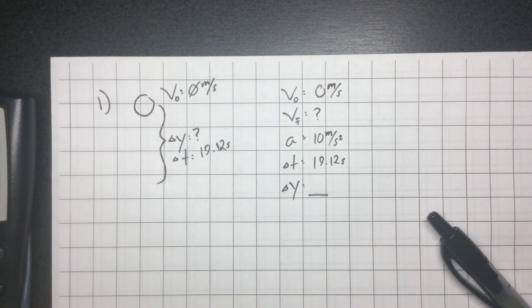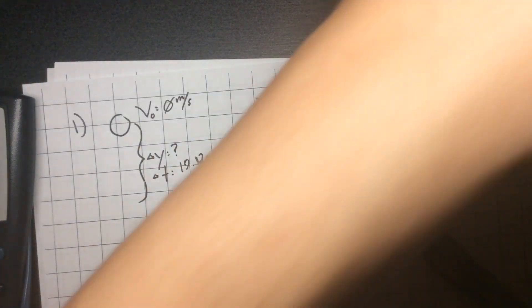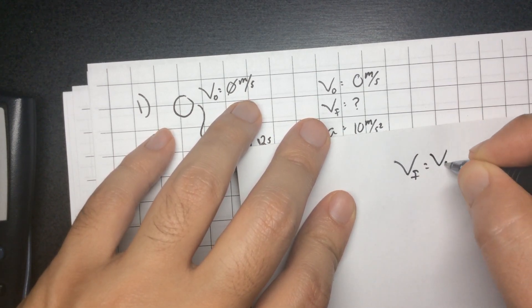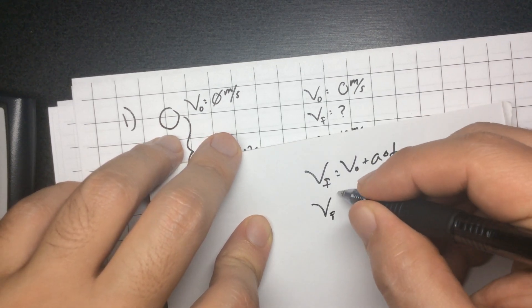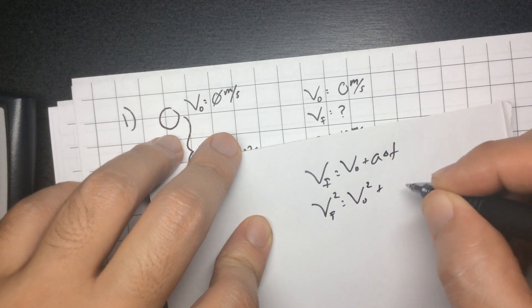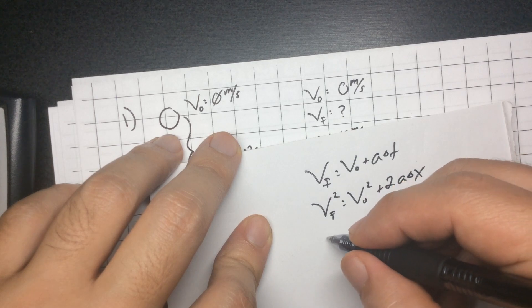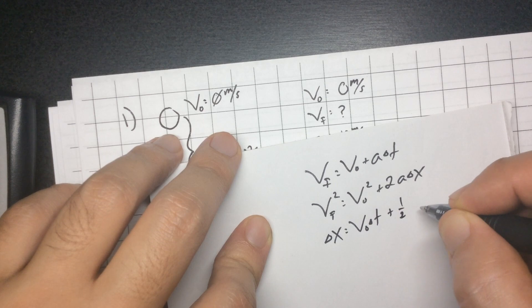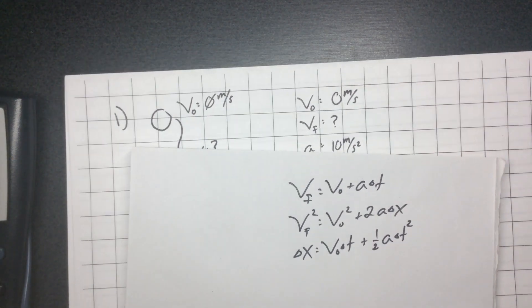So we have these equations. Final velocity equals initial velocity plus acceleration times time. Final velocity squared equals initial velocity squared plus 2a times the change in position. And change of position equals initial velocity times time plus one-half at squared. If you need to pause or rewind this video, do it.